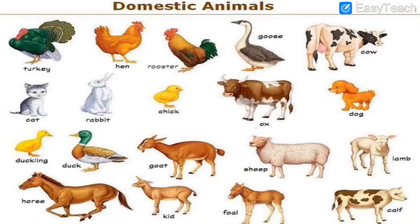After that, we had seen the images of different domestic animals. As you can see on your screen: cow, duck, ox, dog, hen, cat, duckling, horse, foal, calf, sheep, etc. All these are called domestic animals.